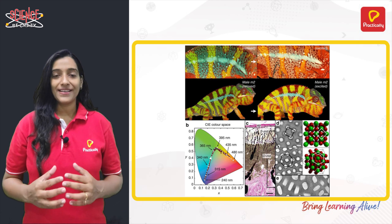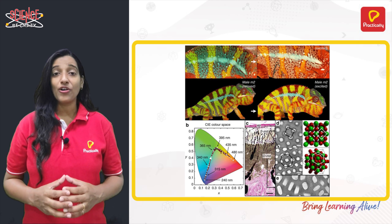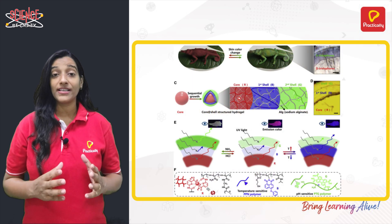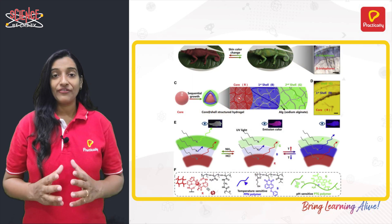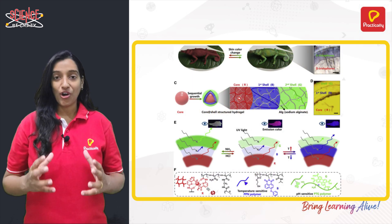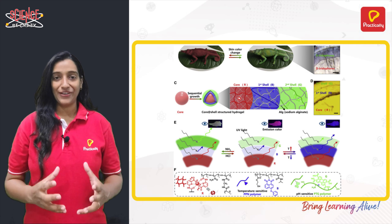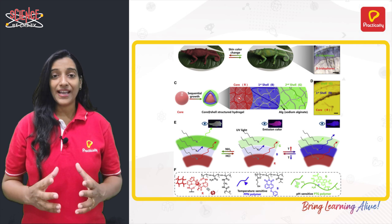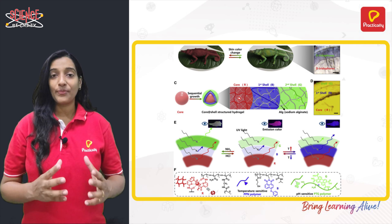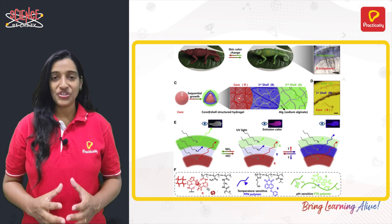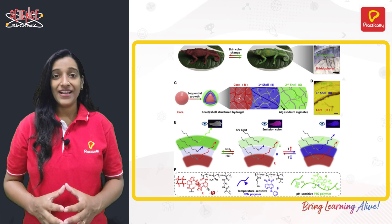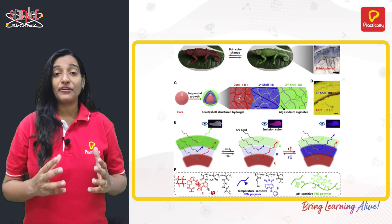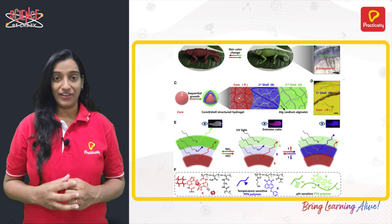Below this layer there is a layer of cells known as iridophore, which contain guanine-based nanocrystals in them. These nanocrystals, depending on their arrangement and order, can reflect different wavelengths of light.